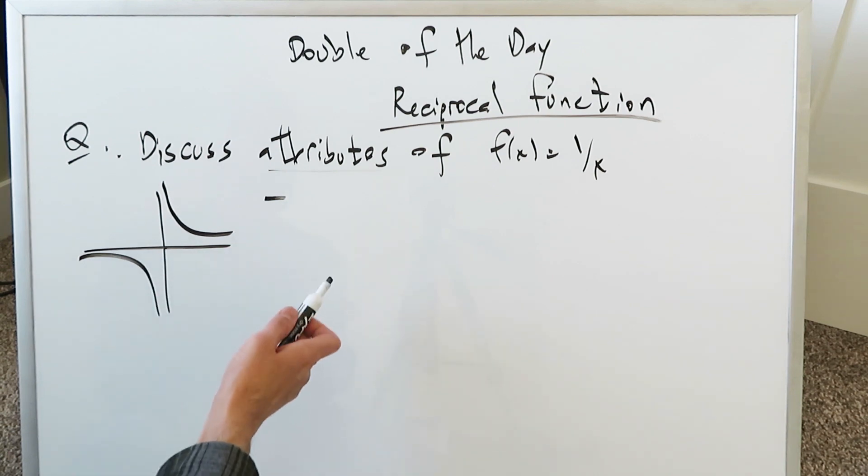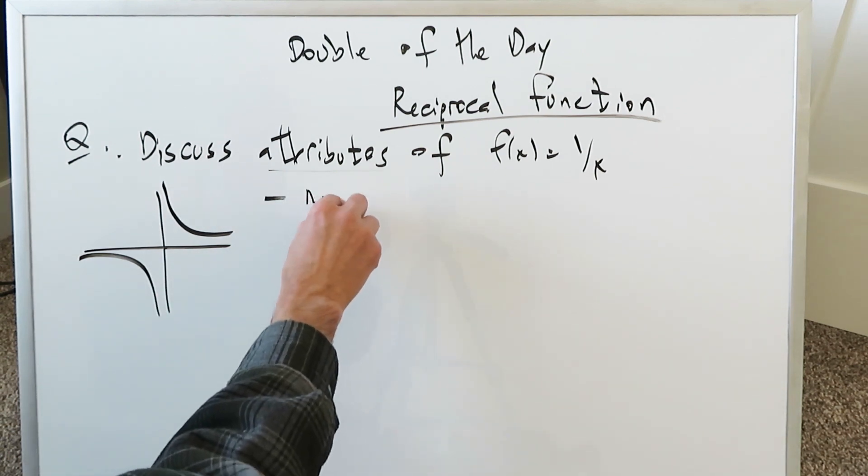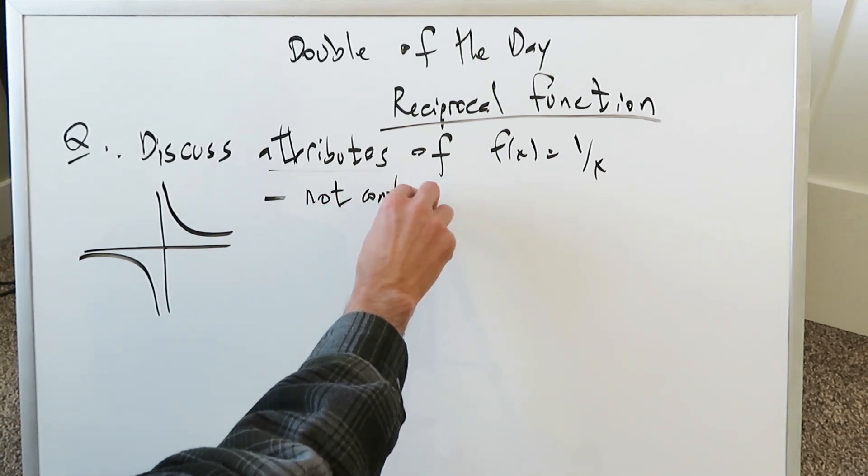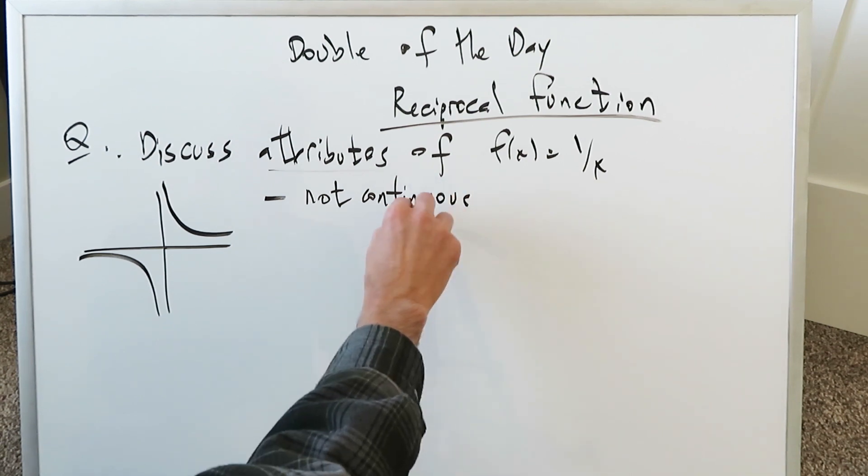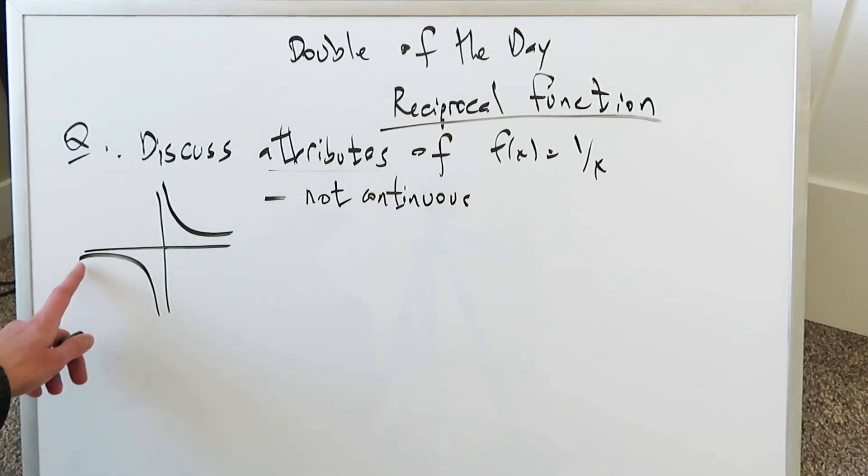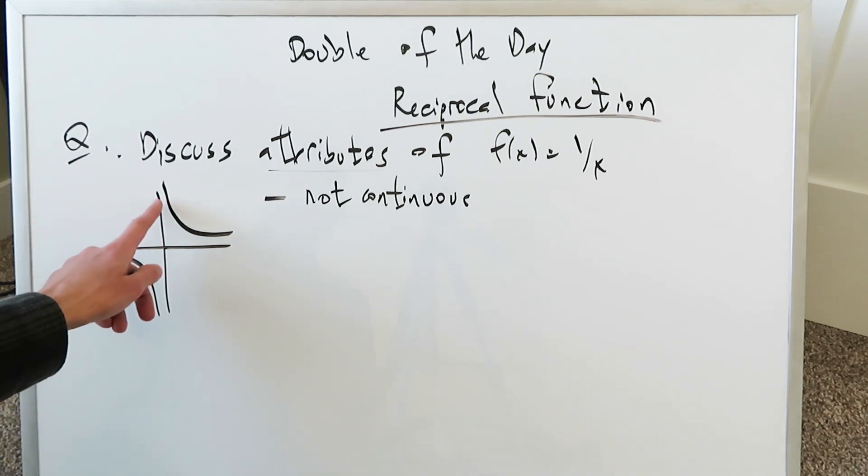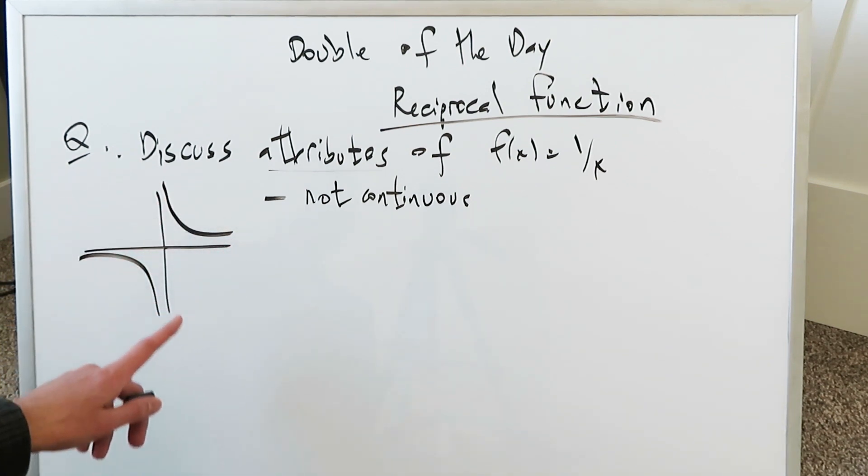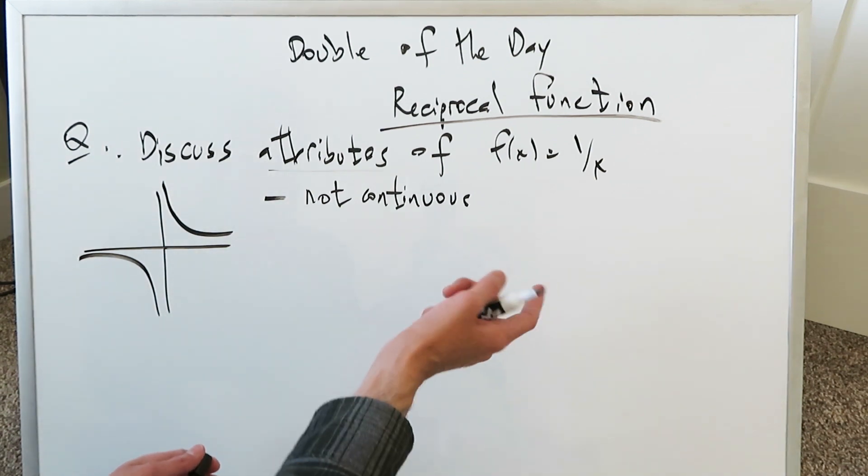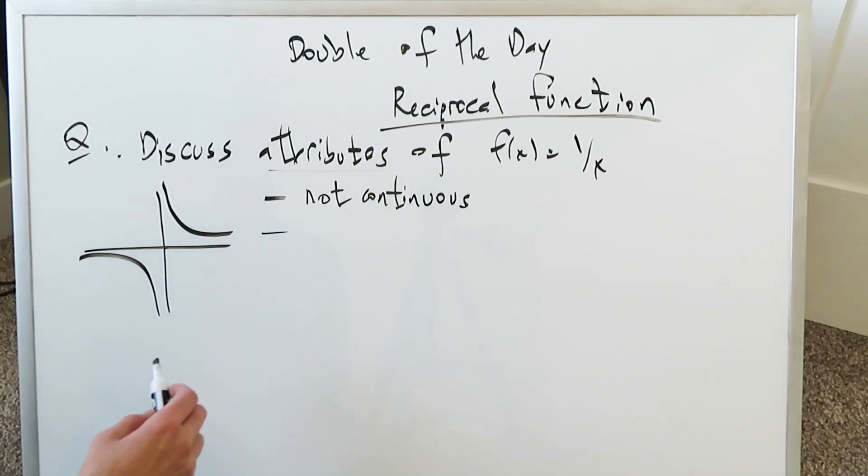The very first noticeable property or attribute is that it is not continuous. Because if you want to trace this function entirely with your pen or your finger, you'd have to lift it off. You can trace it over here, but then you have to lift your finger or pen off that board and trace the remainder part. So it's not a continuous function. That's perhaps the most important thing.